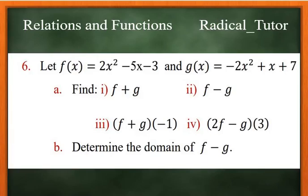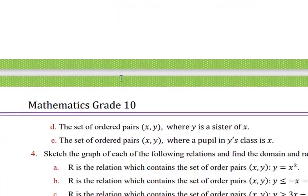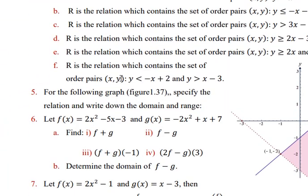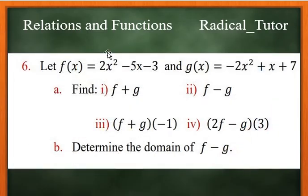Hello everyone, I am Cassandra Jening from Radical Tutor. I'm going to teach mathematics unit 1. Question number 6: Let f of x equal 2x squared minus 5x minus 3 and g of x equal negative 2x squared plus x plus 7.